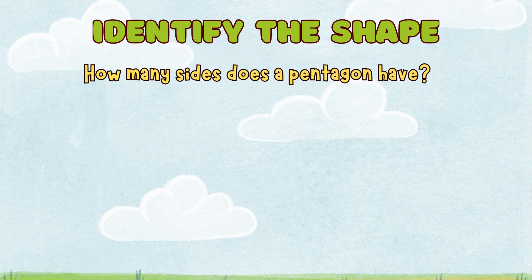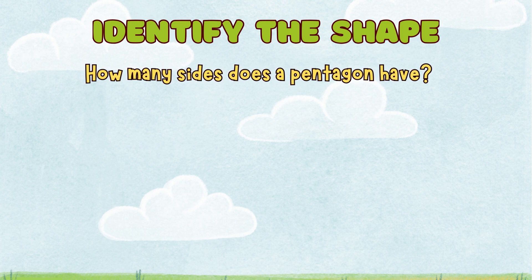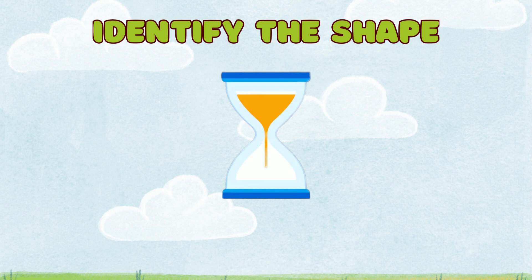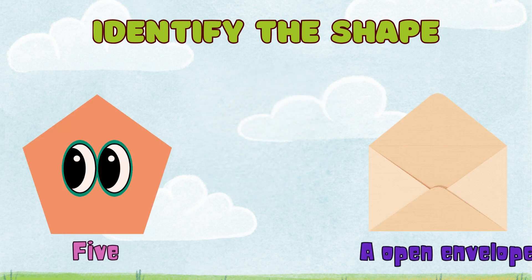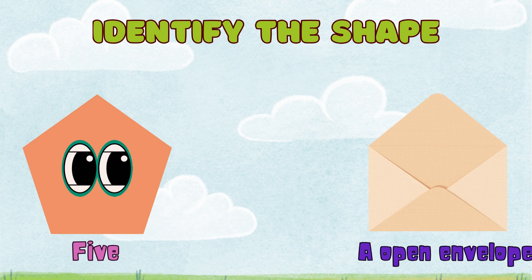How many sides does a pentagon have? The answer is five. A pentagon has five sides. The shape of an open envelope is a pentagon.